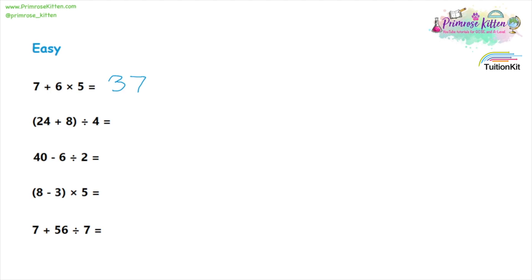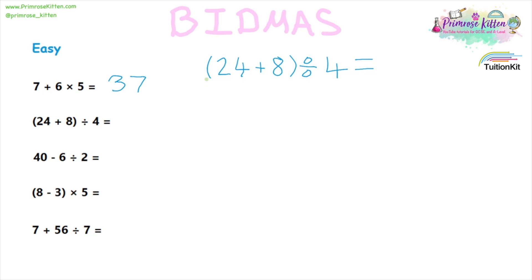For the next one, we need to think about our BIDMAS. Here we have brackets, addition and division, and we can't just go from left to right. The first thing we have to do is the brackets. So first we need to do 24 plus eight, which gives us 32. Then after we've done the addition, we can divide it by four. So our sum is 32 divided by four, which gives us eight.